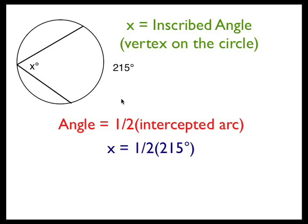So half of 215 is 107.5 degrees. The measurement for angle X is 107.5 degrees.